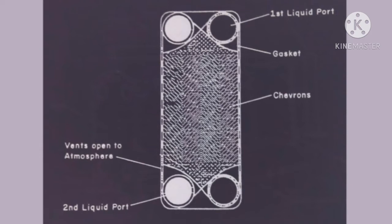My first heat exchanger is the plate type heat exchanger. The first advantage is it is simple and compact in size. Second advantage is heat transfer efficiency is more in plate type heat exchangers. Third advantage is it can be easily cleaned. Fourth advantage is no extra space is required for dismantling, because the plate type heat exchanger is simple and compact in size.